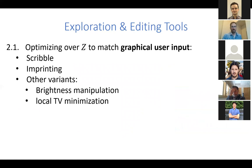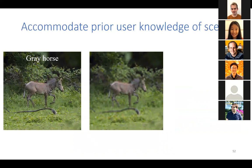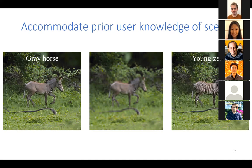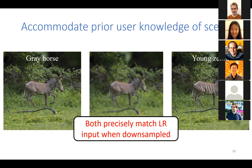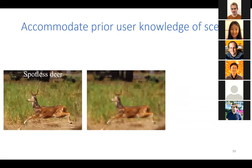There are other variants of graphical user input tools — brightness manipulation and local total variation minimization to encourage piecewise smoothness. Using our framework, we can take a low-resolution input and make it look like a gray horse or a young zebra, with all outputs guaranteed to precisely match the low-resolution input when downsampled. Similarly, with a low-resolution deer, we can explore different corresponding high-resolution images — a spotless deer or a different species of spotted deer.